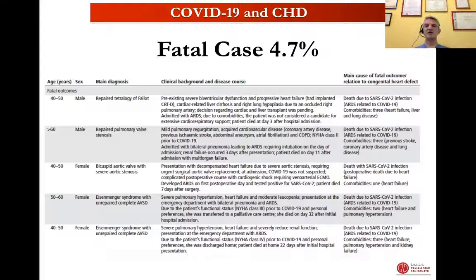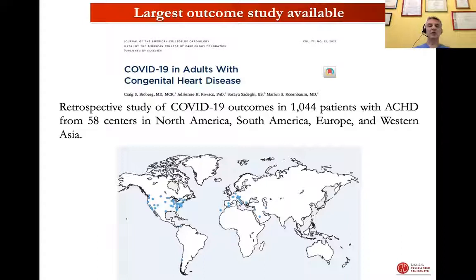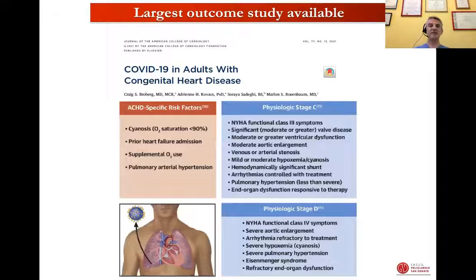Patients had one, two, or up to three comorbidities that can affect the disease evolution quite significantly. The paper that gives us the most information was published just some weeks ago, taking into consideration more than 1,000 patients from 58 different centers around the globe. What was important to find was that the most significant risk factors are related not to the underlying anatomical condition, but to the pathophysiology of the patient — such as the presence of cyanosis, prior heart failure admission, supplemental oxygen use, or pulmonary arterial hypertension.